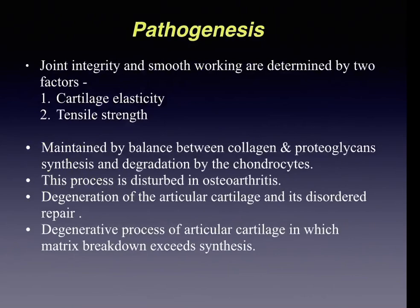In pathogenesis, normal joint integrity depends on tensile strength and cartilage elasticity, maintained by a balance between collagen and proteoglycan synthesis and degradation by chondrocytes. This process is disturbed in osteoarthritis — there is degeneration of articular cartilage and the repair is disordered. Osteoarthritis is essentially a degenerative process in which matrix breakdown exceeds synthesis.